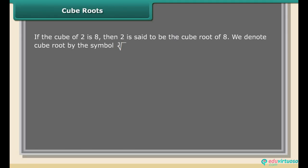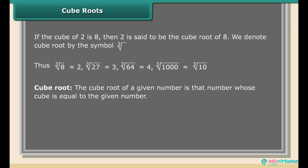Cube roots. If the cube of 2 is 8, then 2 is said to be the cube root of 8. We denote cube root by the symbol ∛. Thus ∛8 = 2, ∛27 = 3, ∛64 = 4, ∛1000 = 10. The cube root of a given number is that number whose cube is equal to the given number.